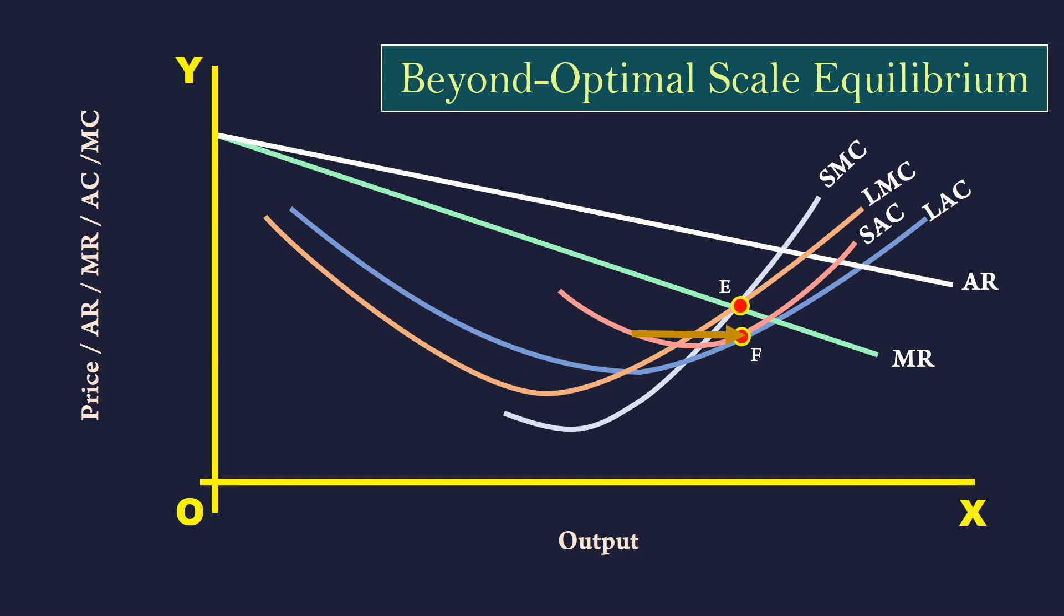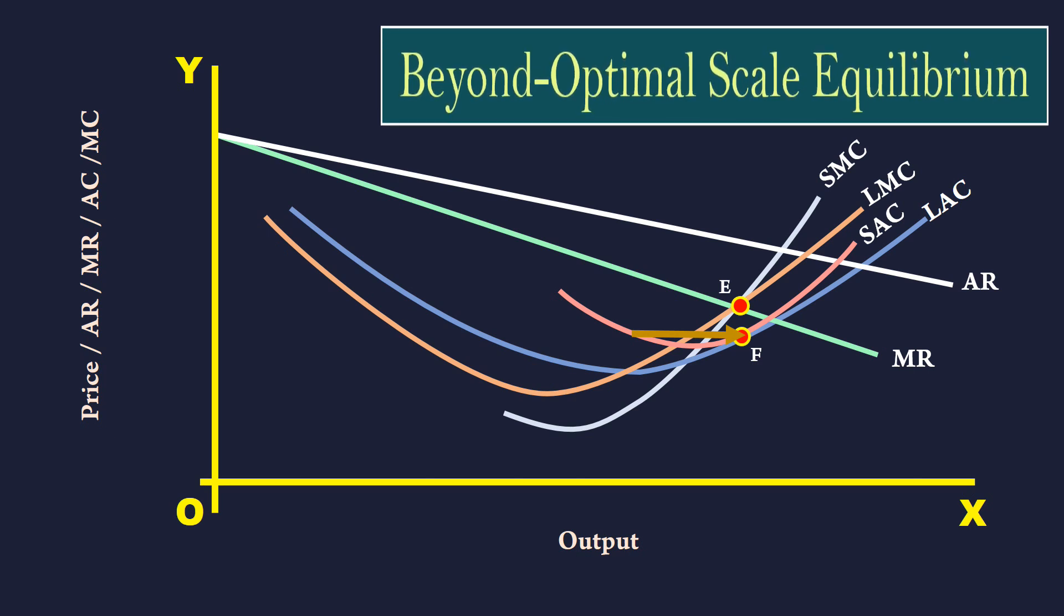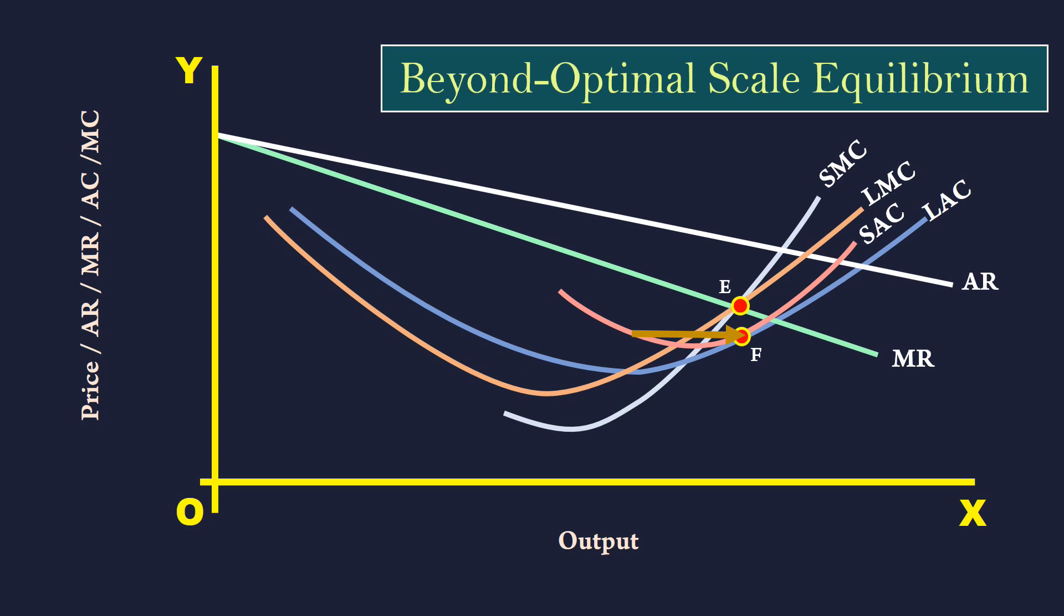Such an equilibrium is popularly known as beyond optimal scale equilibrium. This kind of behavior on the part of monopoly firm is quite common in the field of public utility companies operating at national level.